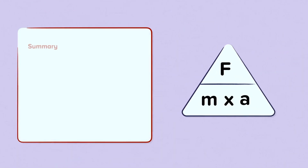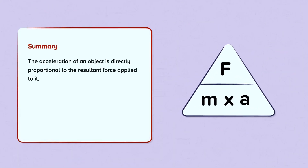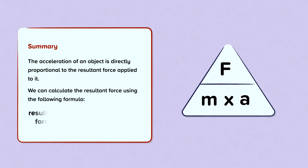Summary. The acceleration of an object is directly proportional to the resultant force applied to it. We can calculate the resultant force using the following formula: resultant force is equal to mass times acceleration.